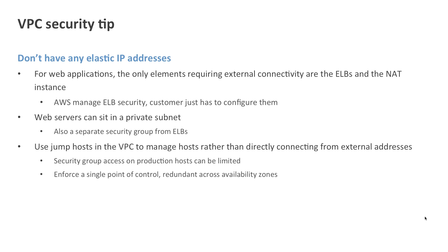One tip for designing your VPCs: you don't actually have to manage any internet IP addresses of your own. When you use an elastic load balancer, Amazon manages the IP addresses assigned to that load balancer so that you don't have to. This means your web or application servers can live in private subnets with private IP addresses, receiving traffic from the elastic load balancer. I also always encourage customers not to provide direct management access to instances within their VPC, but to use jump hosts — one in each availability zone — as a single point to log on and manage the rest of their Amazon instances, restricting who can connect on administration ports.